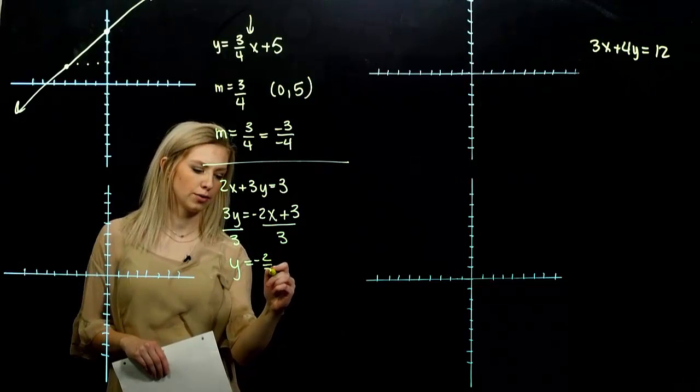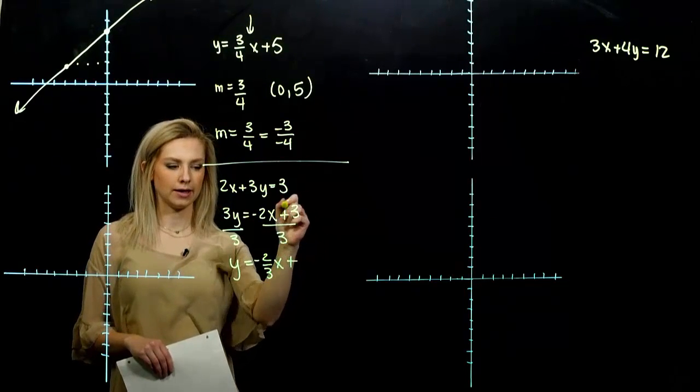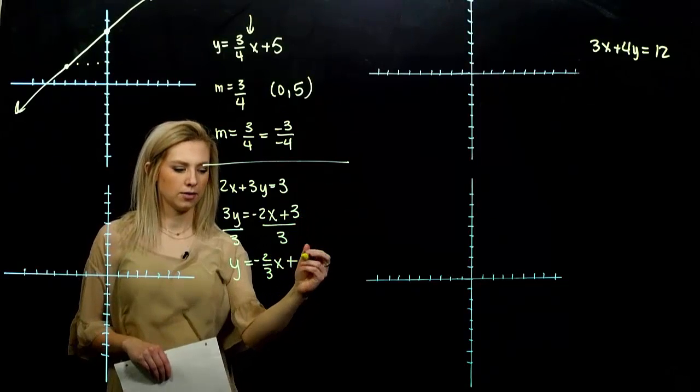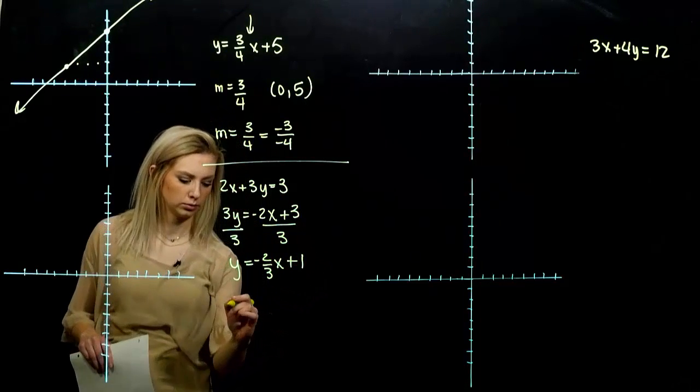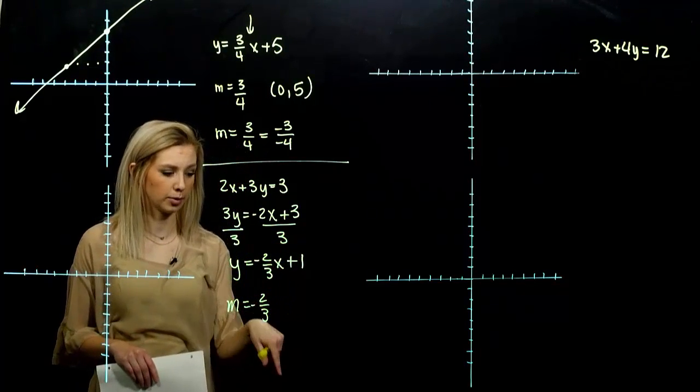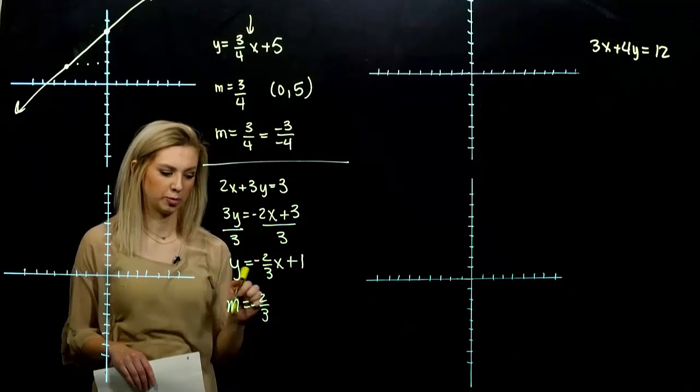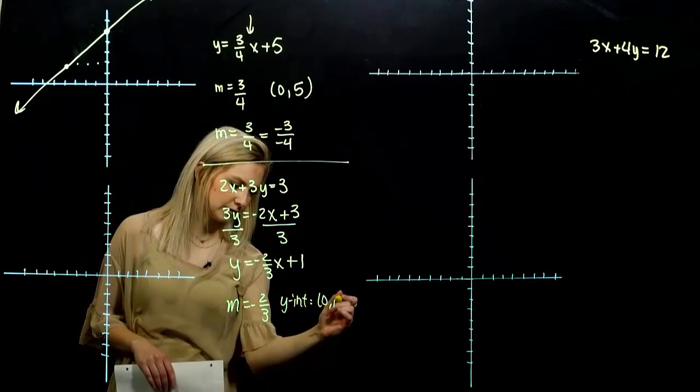So the slope is minus two-thirds. And what is the coefficient on the end? Three divided by three gives me one. So slope negative two-thirds. We have the option to give the negative up or down when we're drawing our picture. Y-intercept happens at zero, one.